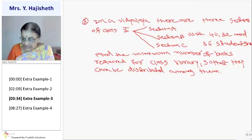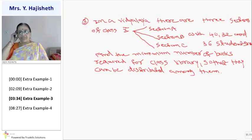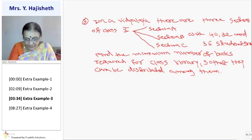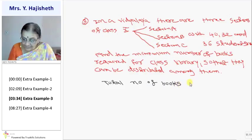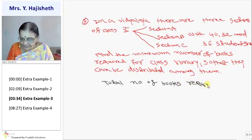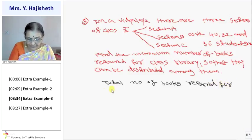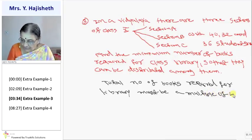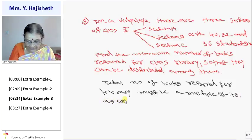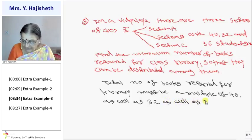Now, total number of books required for library must be multiple of 40, multiple of 32, and multiple of 36. Total number of books required for library. So, library is to be used by 10 standard students. Must be a multiple of 40 also, as well as 32 also, as well as 36.